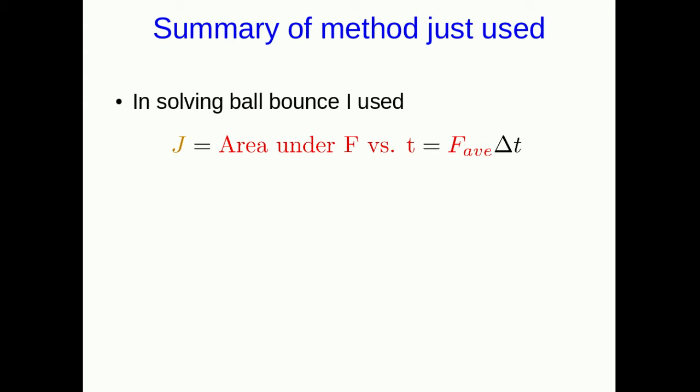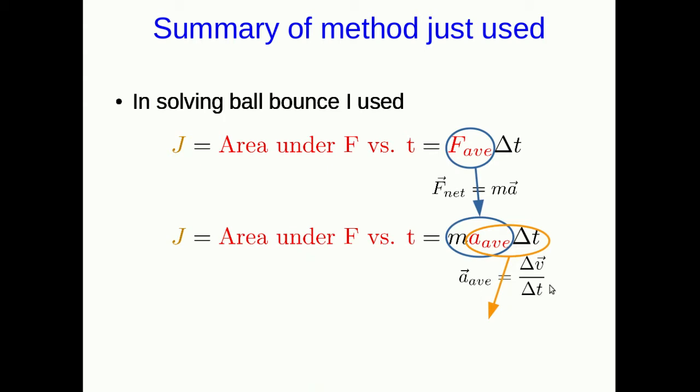I just did a few tricky things, so let's go back over them. I solved for the velocity after the bounce using the impulse, which was the area under the F versus t curve. By definition of average, that's the average force times the time of the collision. Then we used Newton's second law to turn that F_av into M A_av. Finally, we looked at A_av delta t and recognized from the definition of average acceleration we can turn that into delta v. So in the end, I had a way of getting Vf straight out of the area under the F versus t curve, as long as I knew Vi. This is a trick, although we're going to see there's more to it than a trick.